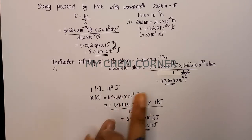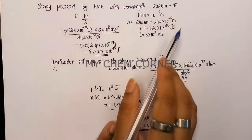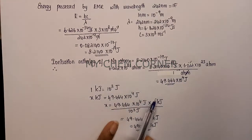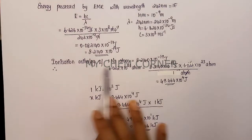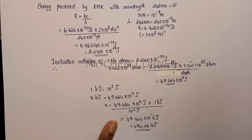This is the answer for the ionization energy per mole. We calculated in terms of mole by converting from per atom to per mole using Avogadro's number.